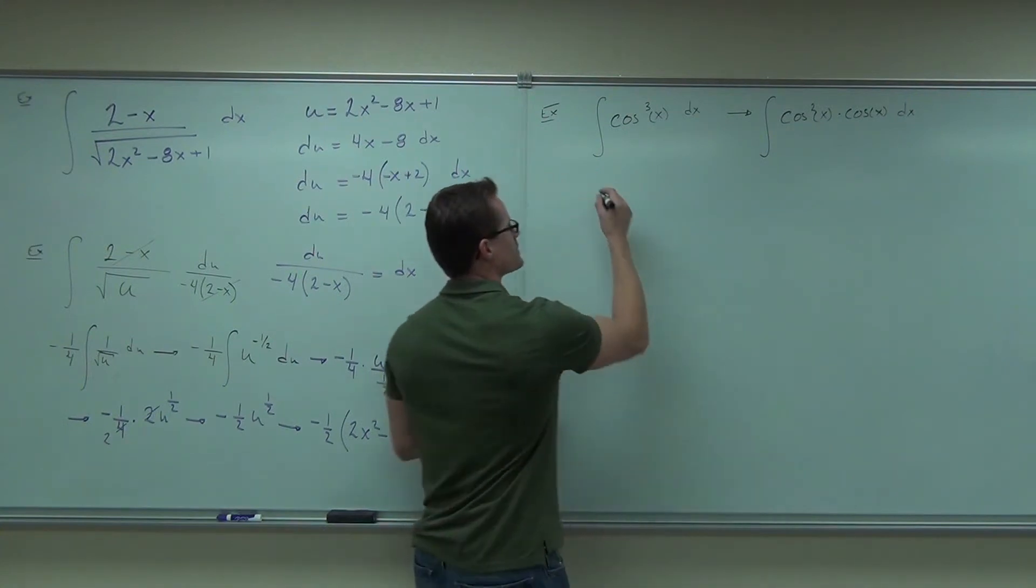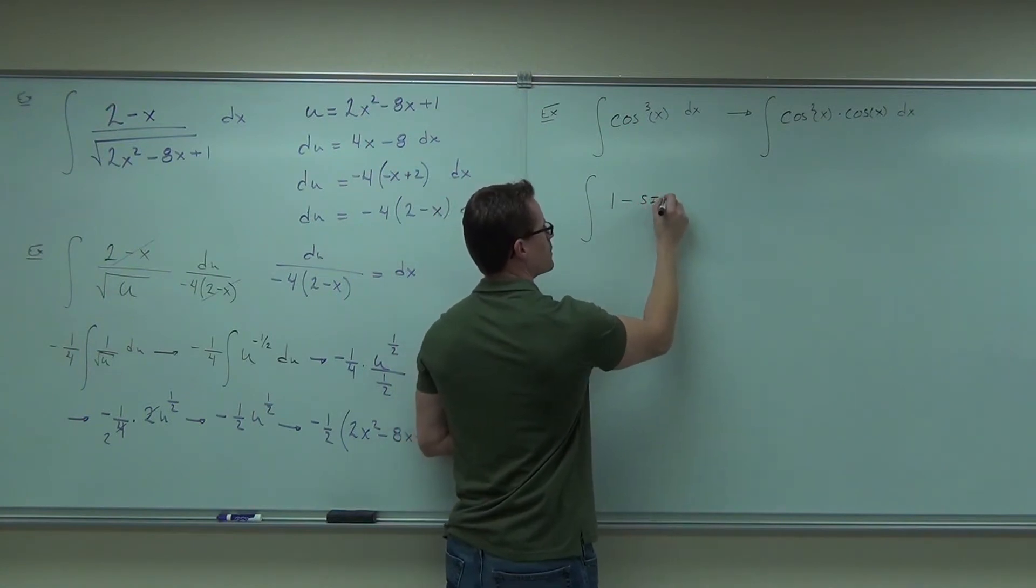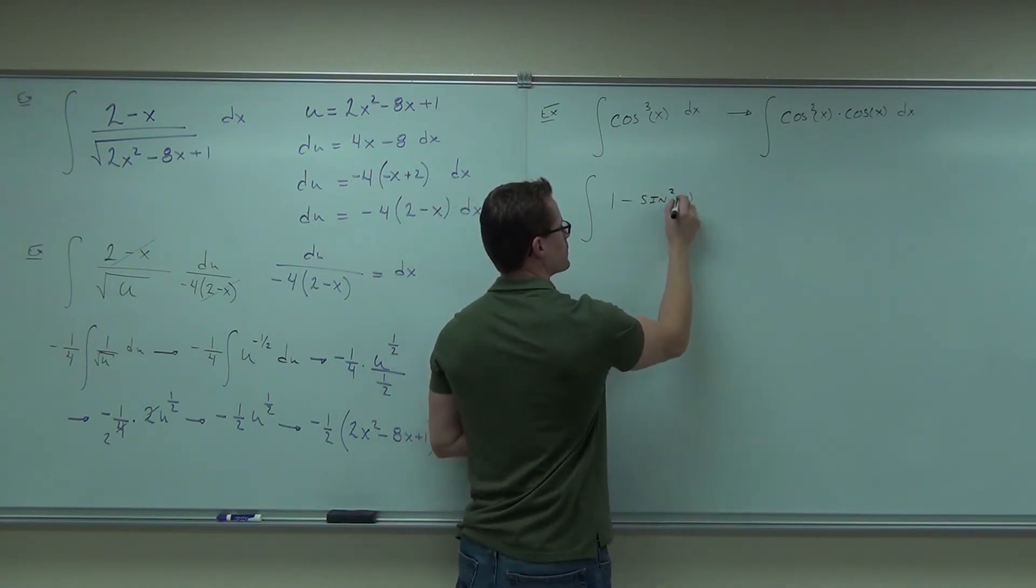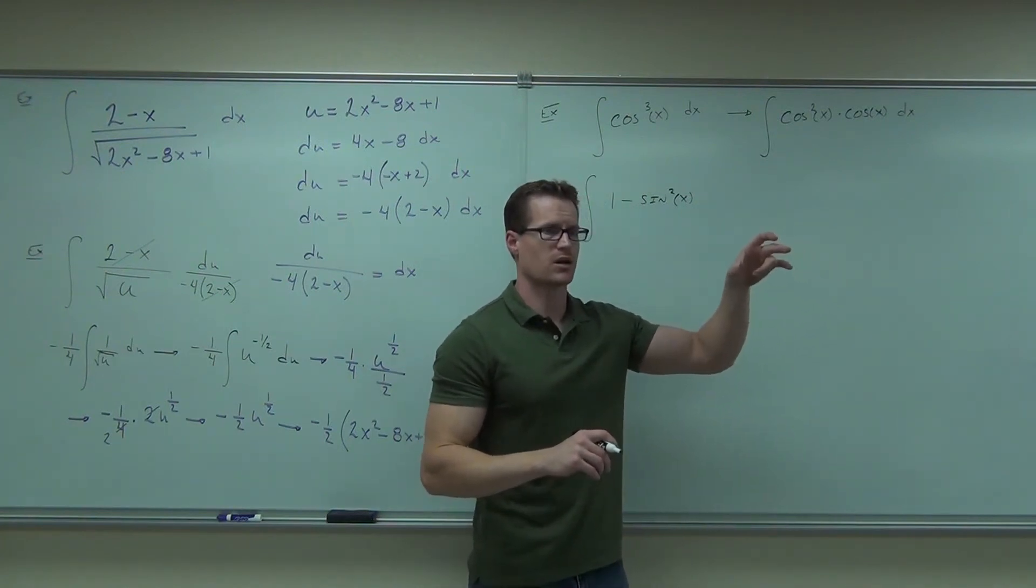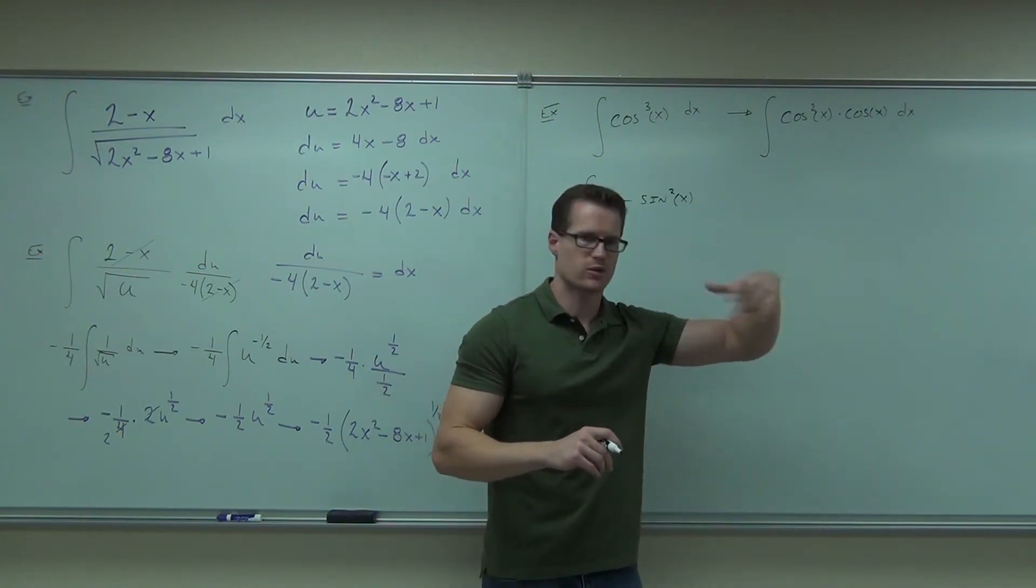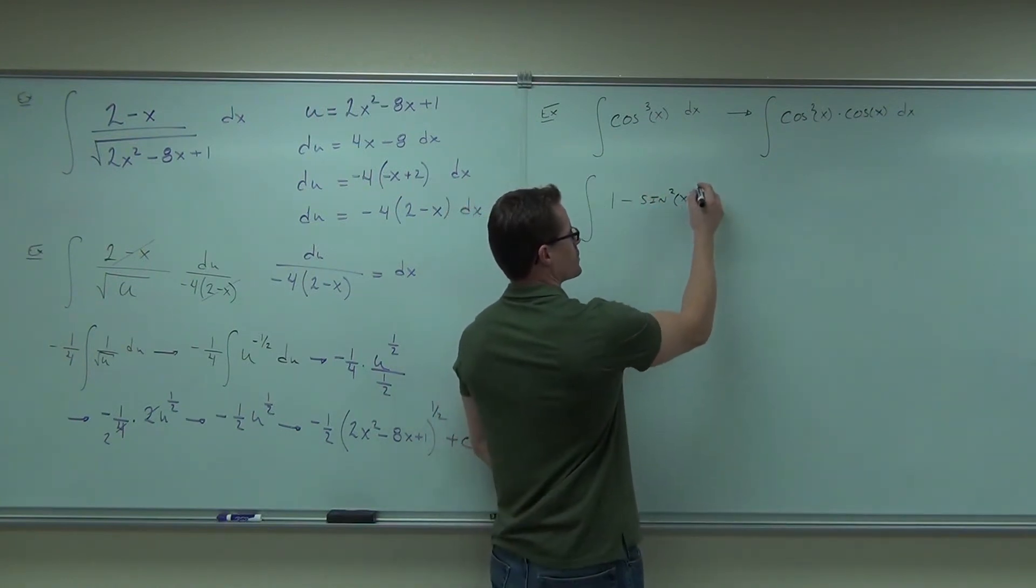And what this says is that instead of cosine squared, why don't you make it 1 minus sine squared x. Which is true because of sine squared x plus cosine squared x equals 1, subtract one to the other, and you have the alternate trig function that you're looking for.